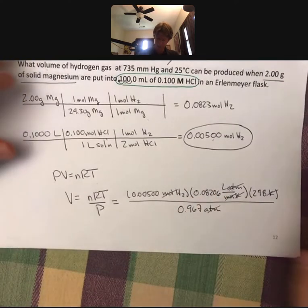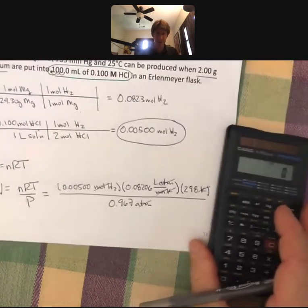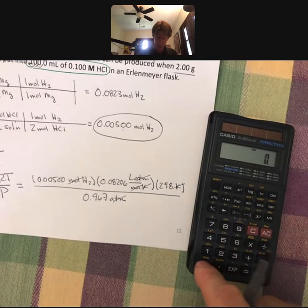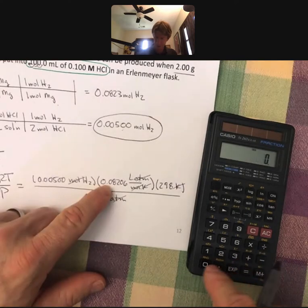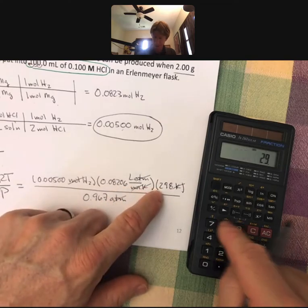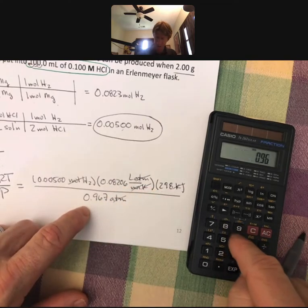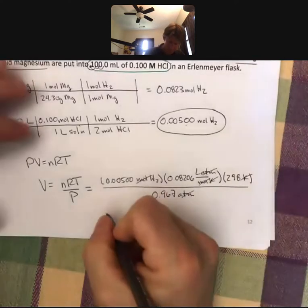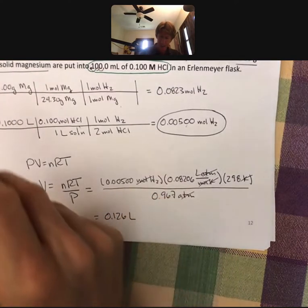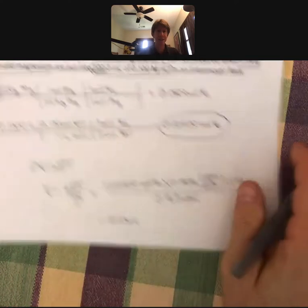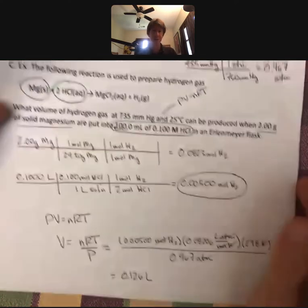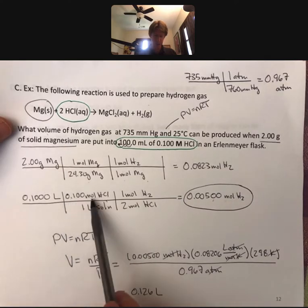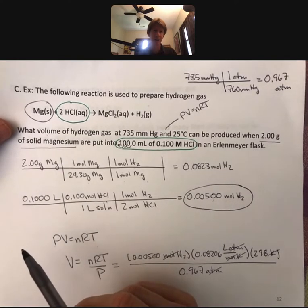Let's go ahead and multiply this out: 0.005 times 0.08206 times 298 divided by 0.967. And if I've done that correctly, 0.126 liters. It just says what volume of hydrogen gas. It doesn't say what units, so I'm going to leave it as liters. And that's our first problem involving a gram calculation, a solution calculation, and an ideal gas law calculation.